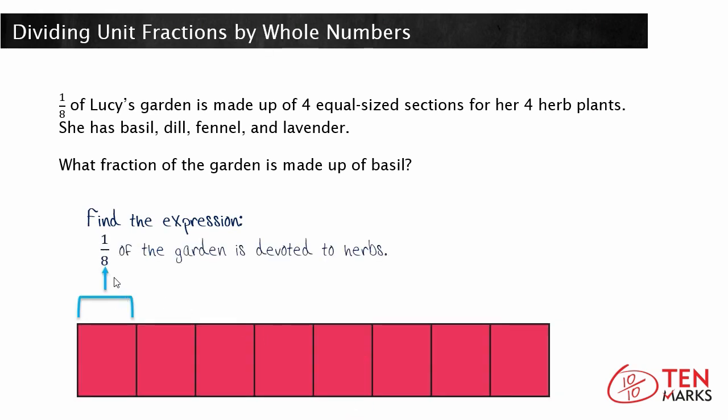You know that one eighth of the garden is devoted to herbs. So pretend that this right here is Lucy's garden and that this one eighth piece is her herb garden. You also know that in that piece there's four equal size sections for her four herb plants. We're looking for what fraction of the whole garden is made up of basil. Well, if this one eighth piece is divided into four equal sections, then to find that fraction of basil, you need to take one eighth and divide it by four.